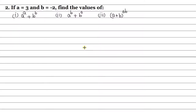Hi. This video is going to be solving question number 2. If a is equal to 3 and b is equal to minus 2, find the values of: first, a to the power a plus b to the power b; second, a to the power b plus b to the power a; and third, a plus b whole to the power ab.